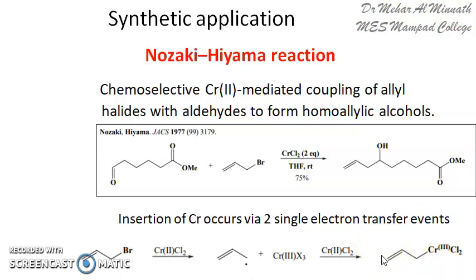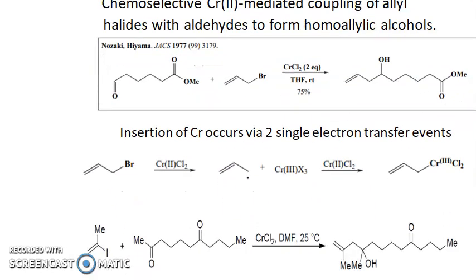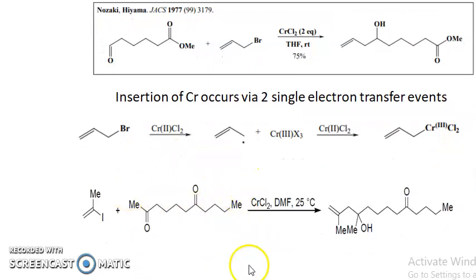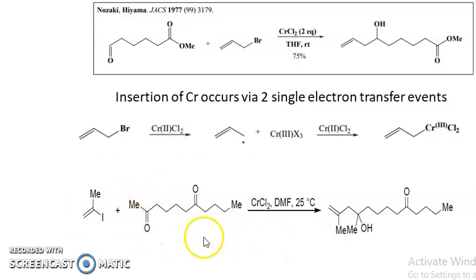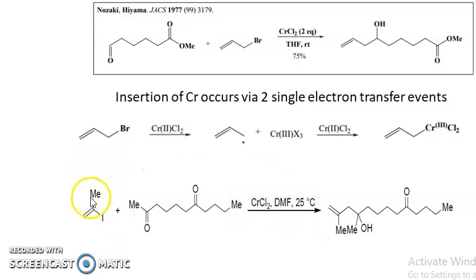Here you are not using a preformed arene–chromium complex. Another example further demonstrates the chemoselectivity: a substrate with a terminal ketone undergoes reaction only at that terminal ketone, leaving the internal keto group undisturbed. The alkene is added to the terminal ketone in the presence of chromium chloride, which reacts with the iodide to form the organochromium reagent.